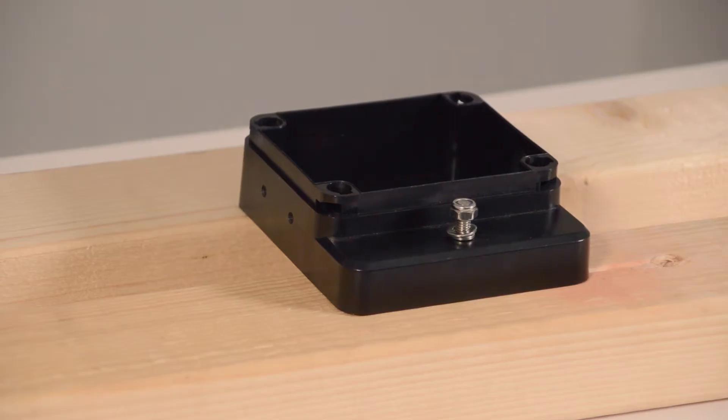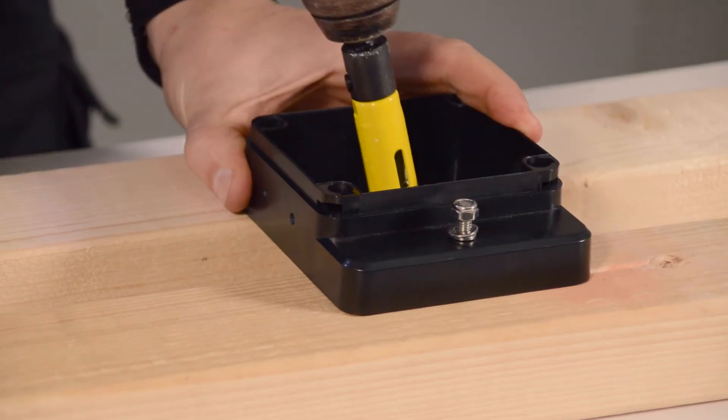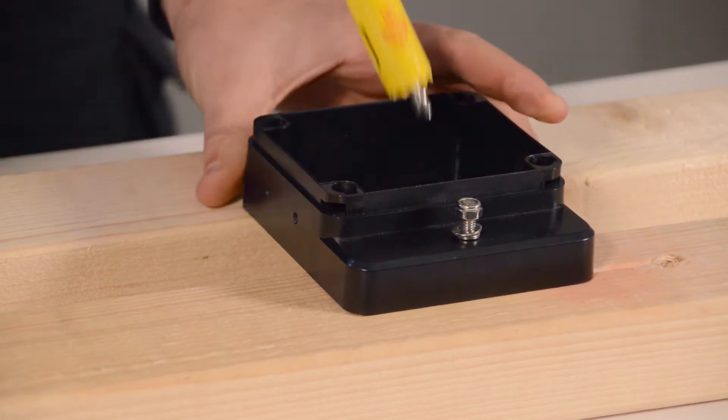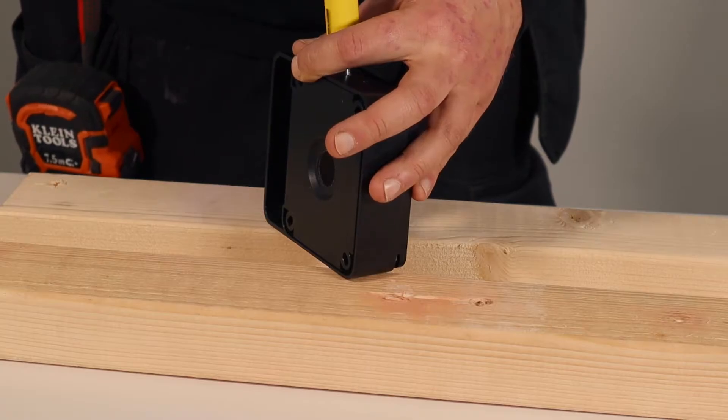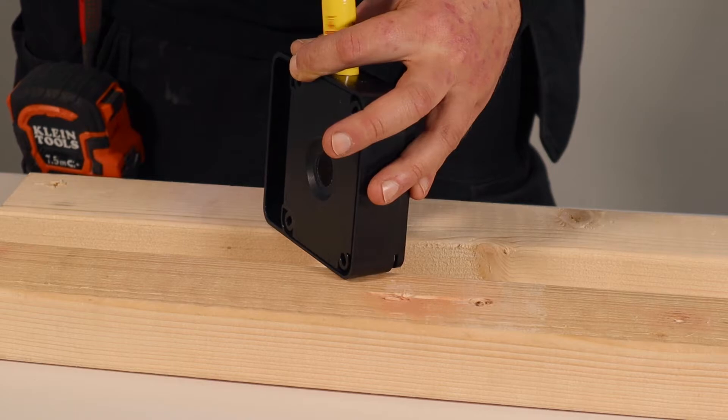Drill a 20mm hole in the centre of the flood box for your electrical supply. Then a second 20mm hole in the side which best fits your installation.